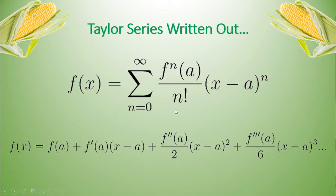n equals 1. We have the first derivative. 1 factorial is 1. And then x minus a. Then we have n equals 2, which is our second derivative. And then we have a. And 2 factorial, which is 2. And so on and so forth.